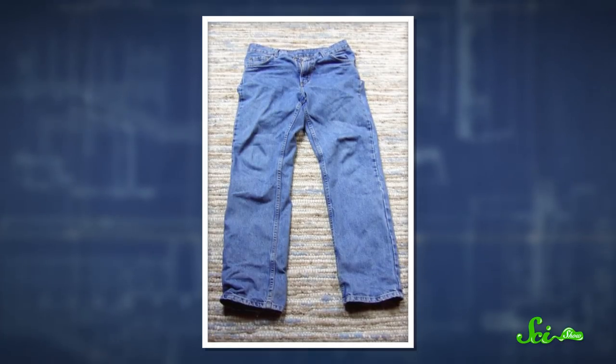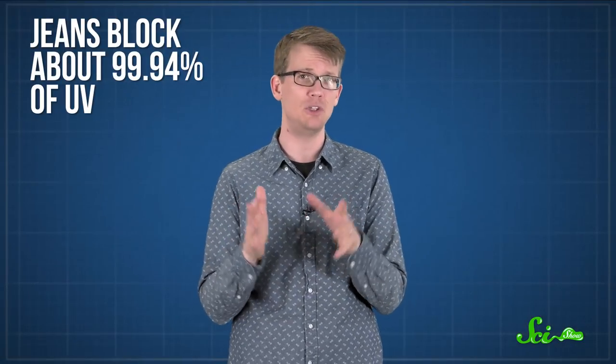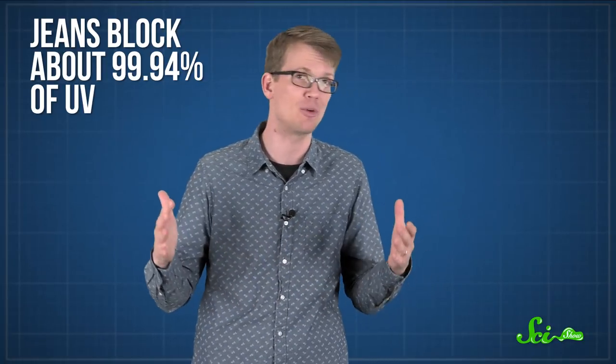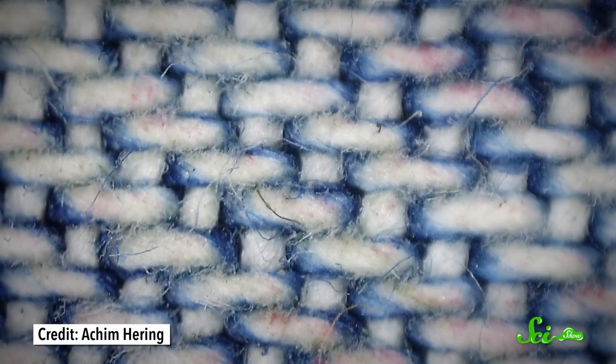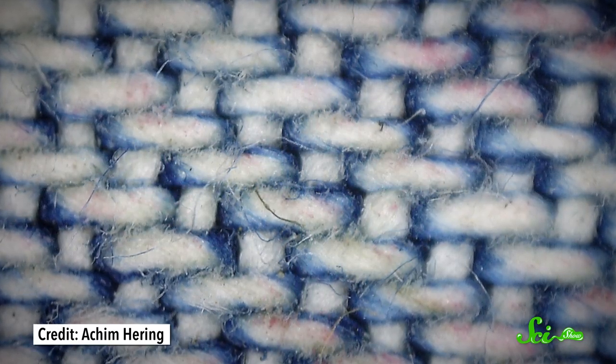So jeans, for example, are pretty much perfect for sun protection. Jeans block about 99.94% of UV, which means you'd have to wear SPF 1700 broad-spectrum sunscreen to do any better. Since they're made of thick, tightly woven fabric, jeans happen to be especially good at blocking UV.